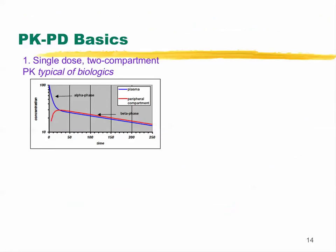Some fundamentals around PK and PD: a single-dose two-compartment model shows the drug dropping rapidly initially in the blue line, then slowing down. You can fit this data into a two-compartment model — a fast initial distribution phase, then a slower beta elimination phase. This is typical of biologics with at least two compartments.